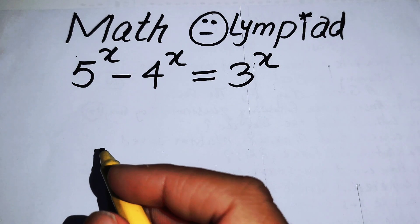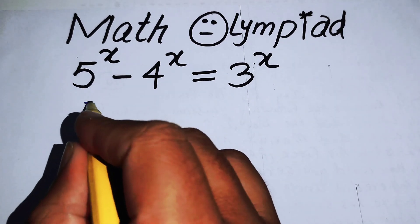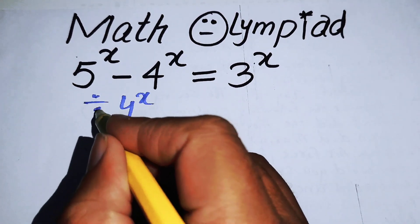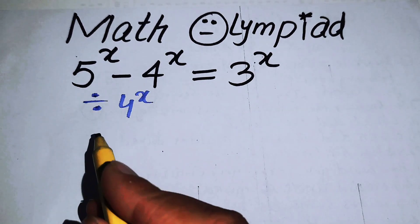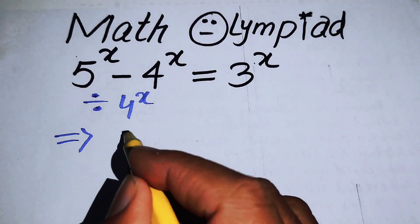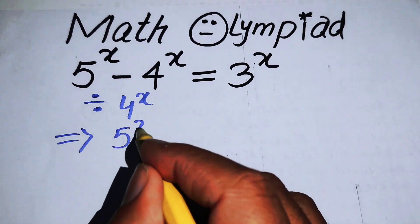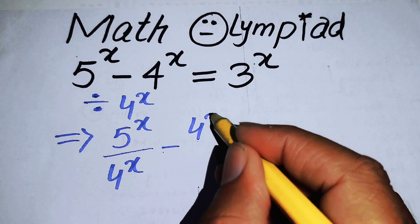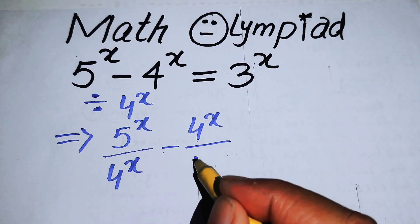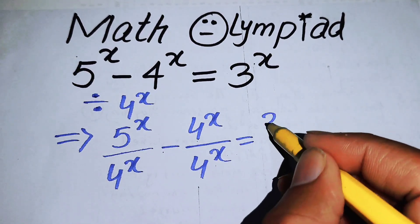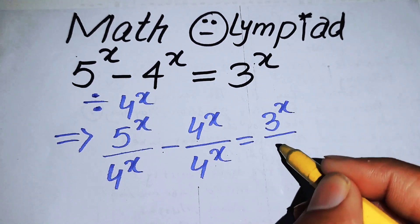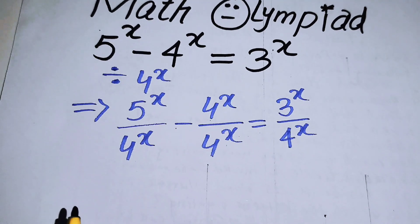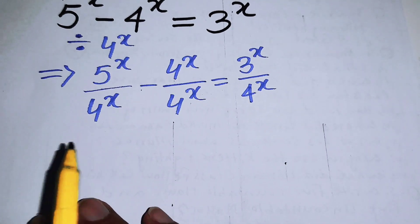The very first thing we are going to do is divide both sides by 4 to the power of X. When you divide both sides by 4 to the power of X, the expression becomes: 5^X over 4^X minus 4^X over 4^X equals 3^X over 4^X.